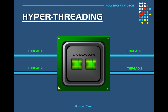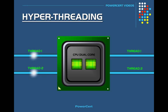For example, here we have a dual core CPU, which basically means it has two physical processing units on a single chip. To further increase the performance and make it even faster, Intel introduced hyper-threading.